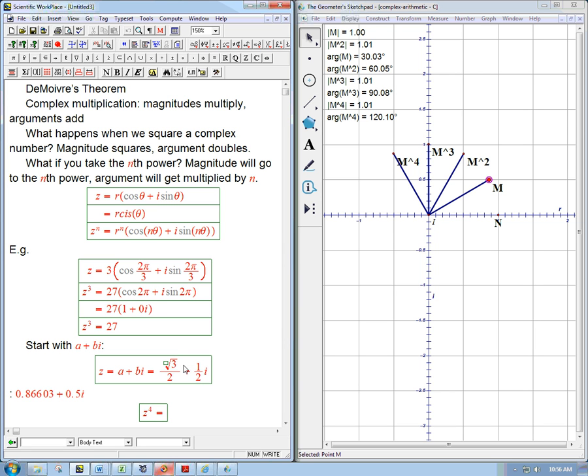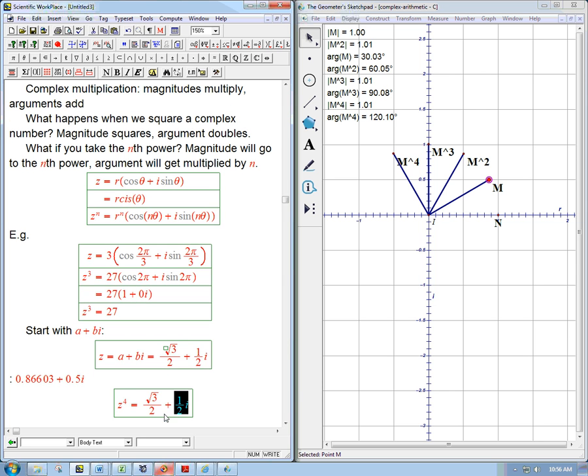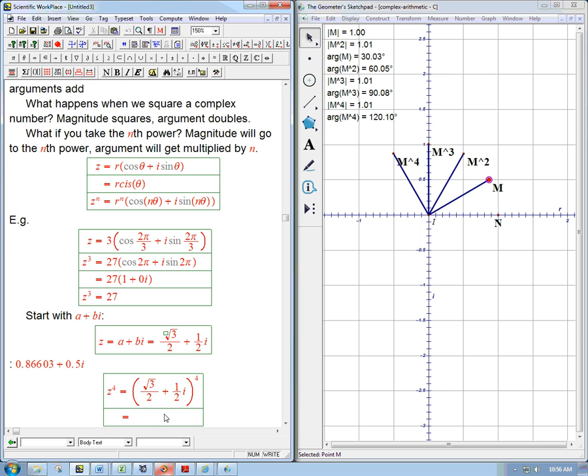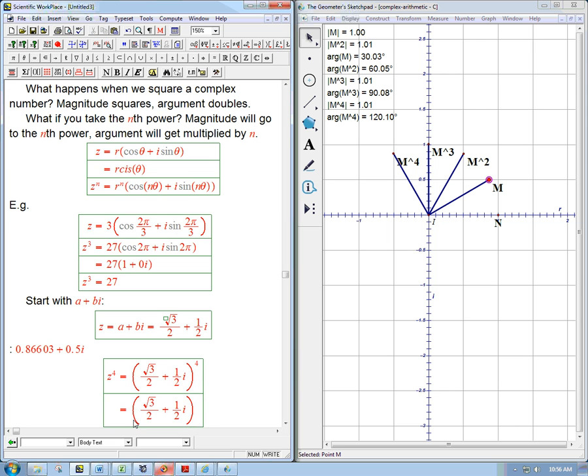It'll be too much of a pain to relabel them all right now. So z to the 4th, that's the task here. What is z to the 4th? Now, we could actually just take this and raise it to the 4th power. We could actually just go ahead and take this thing and multiply it by itself 4 times. Just foil it all out.